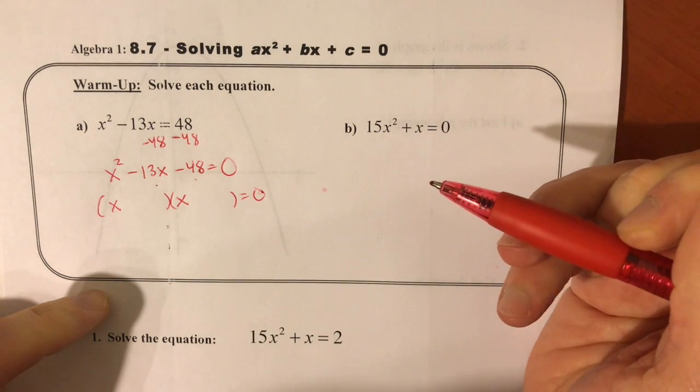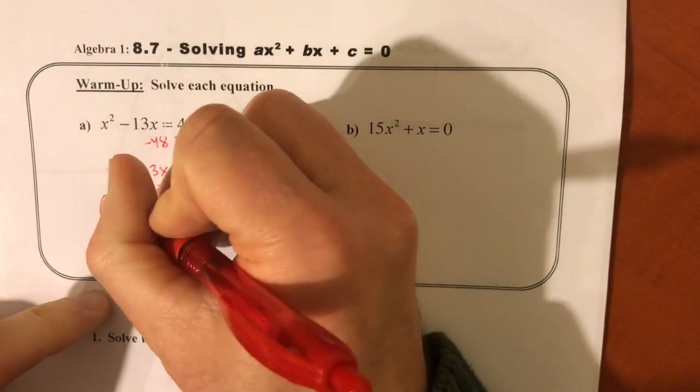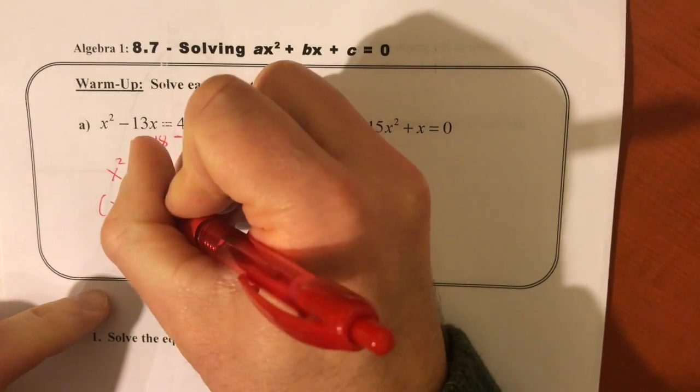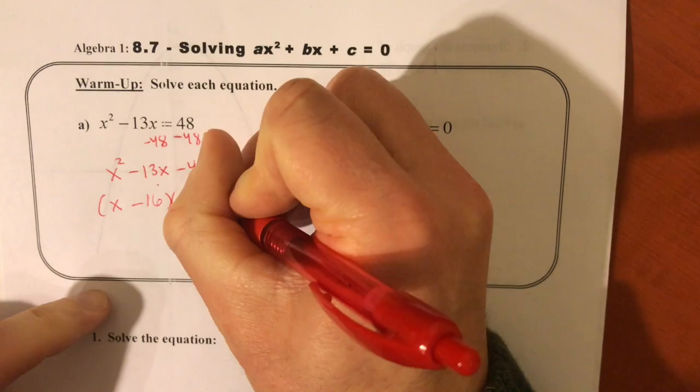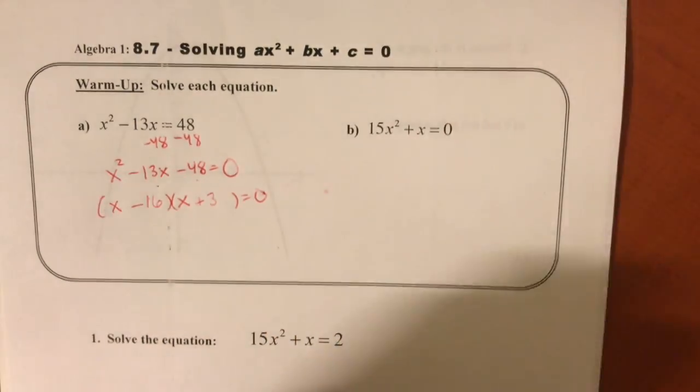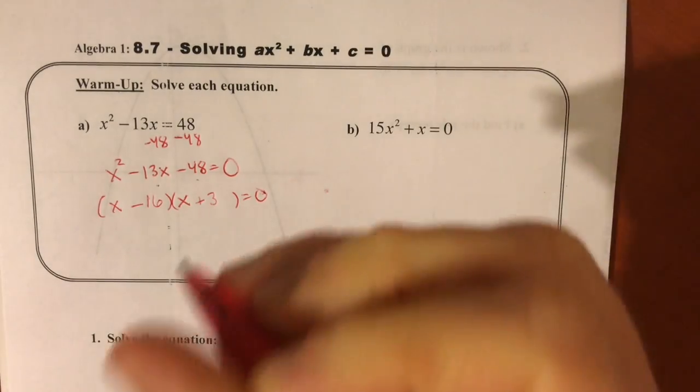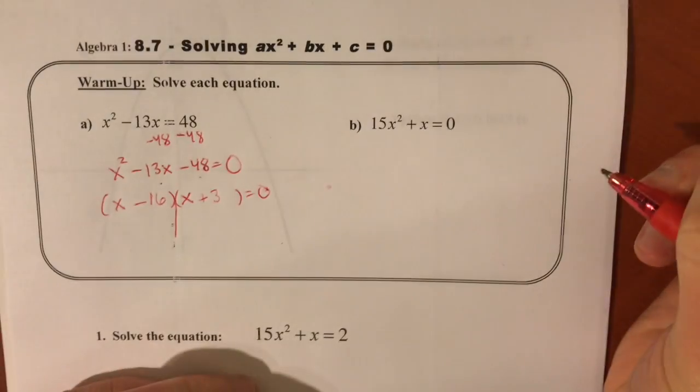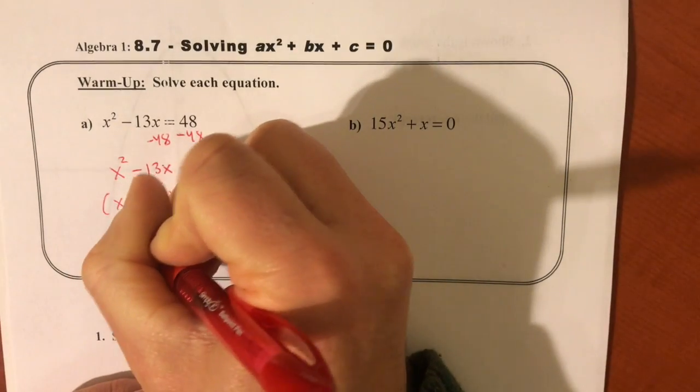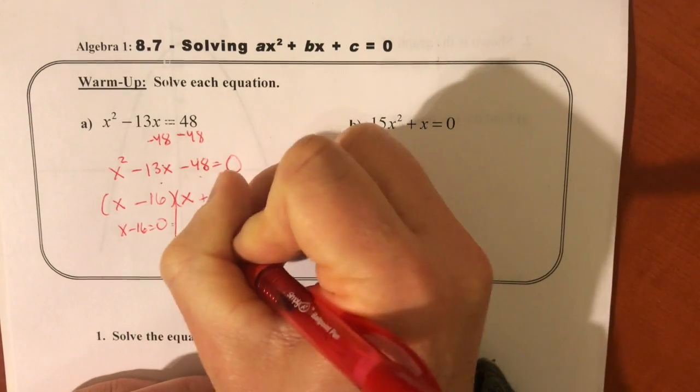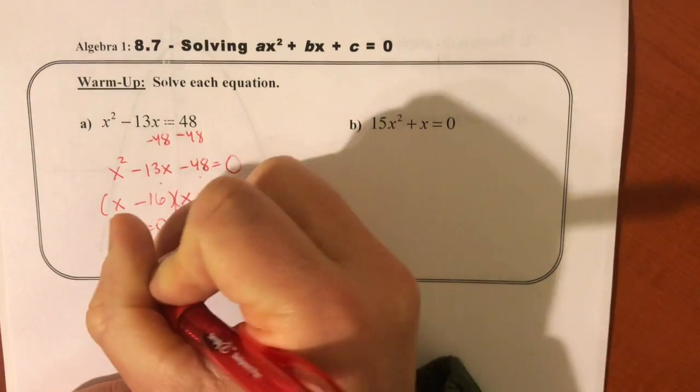So you can take a minute and think about that, but it's going to be negative 16 and positive 3. Negative 16 and positive 3. And therefore, when you set each factor equal to 0, you're going to get solutions of positive 16 and negative 3.